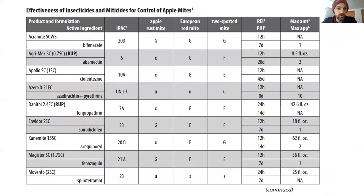We also have new affixit tables for mites for apples. You can see Abamectin here — that's how we note and designate a restricted use product, just RUP in parentheses.